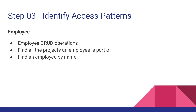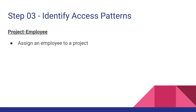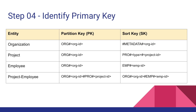There's also the project employee entity, where the main access pattern is assigning an employee to a particular project. Step number four is about identifying the primary key for our table. Now that we have a good understanding of the main access patterns, let's decide what primary keys to use. We'll use a single table, and the primary key is a composite of partition key and sort key.